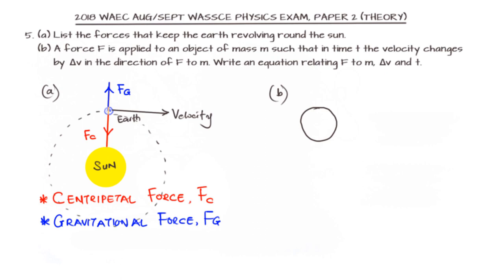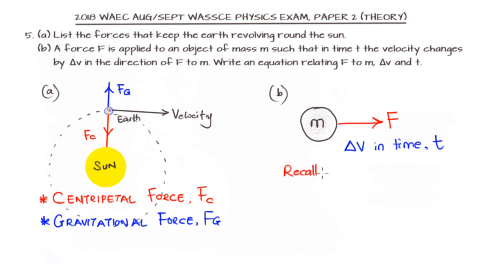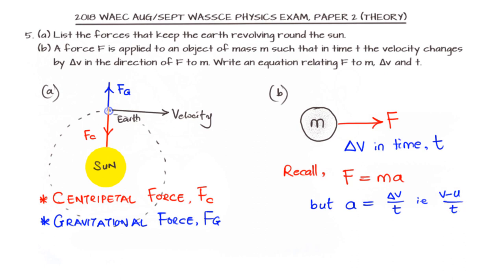In this second question, we are told that a force F is applied to an object of mass m, such that in time t the velocity changes by Δv in the direction of F. We are to write an equation relating F to m, Δv, and t. The force is generally given as mass times acceleration. Since acceleration is change in velocity over time, we have F = m × Δv/t.